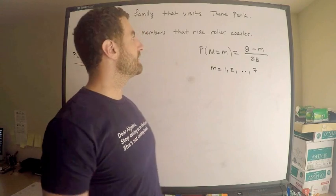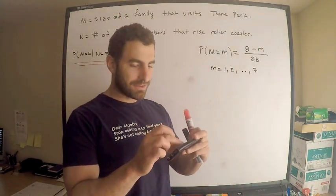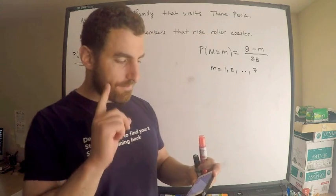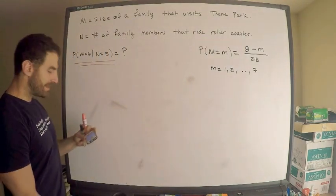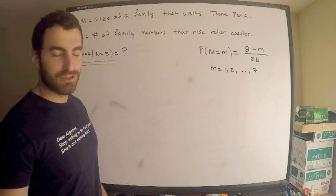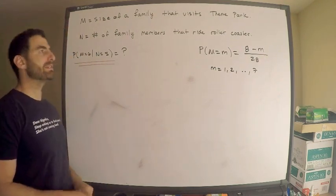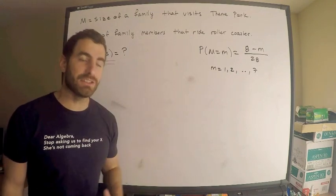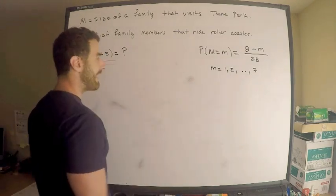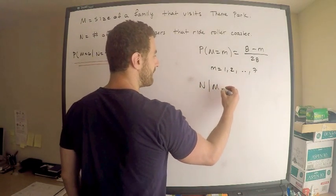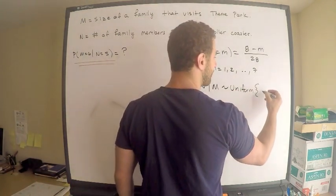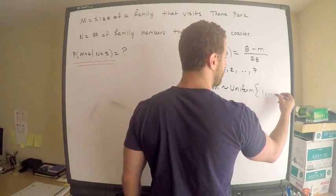Now the other important information is regarding N. They also say that for a family size M, the number of members that ride a roller coaster follows a discrete uniform distribution. Hopefully you're thinking they give me actually a conditional distribution. They tell me explicitly that N given M is distributed uniform, so it's discrete on the set 1 up to M.